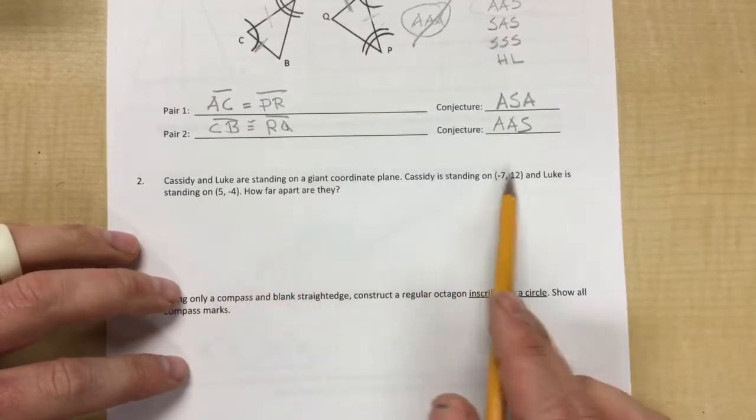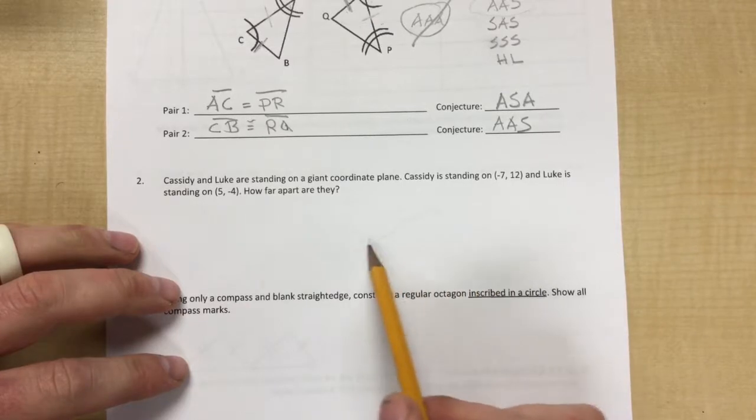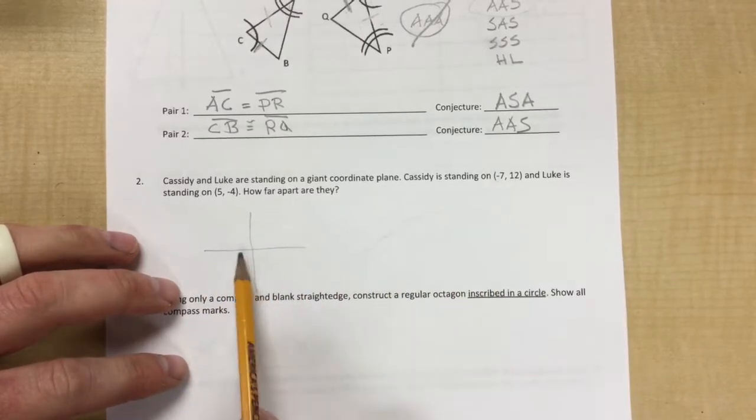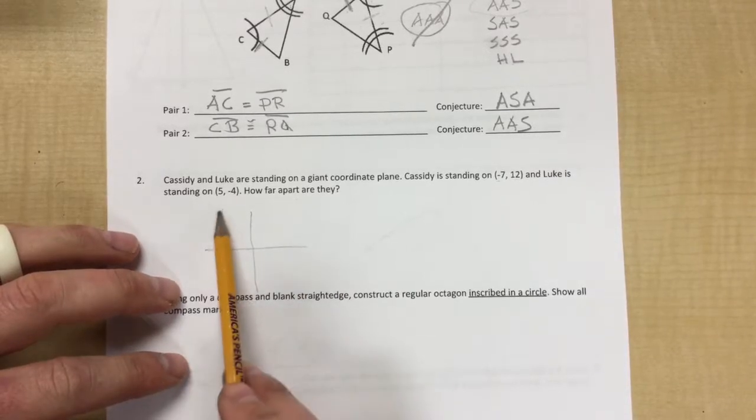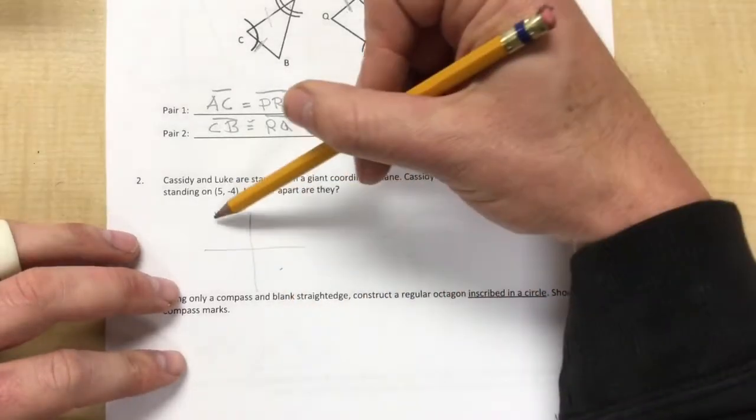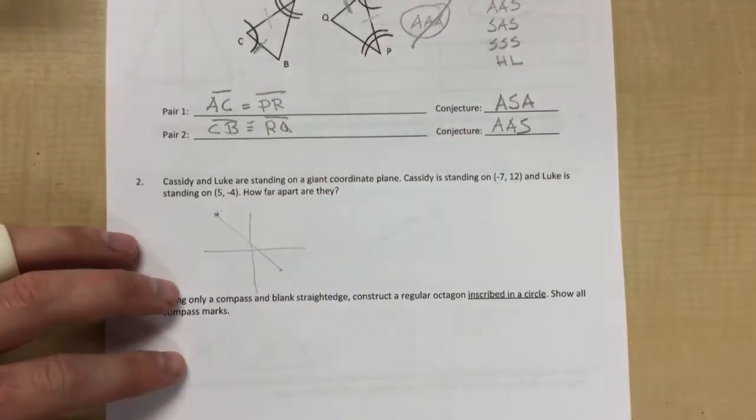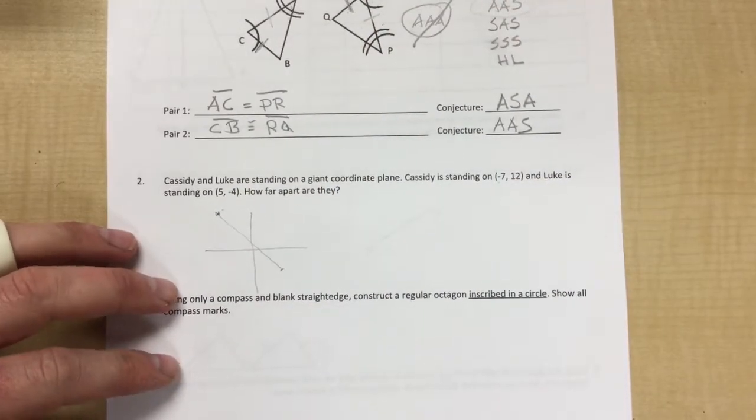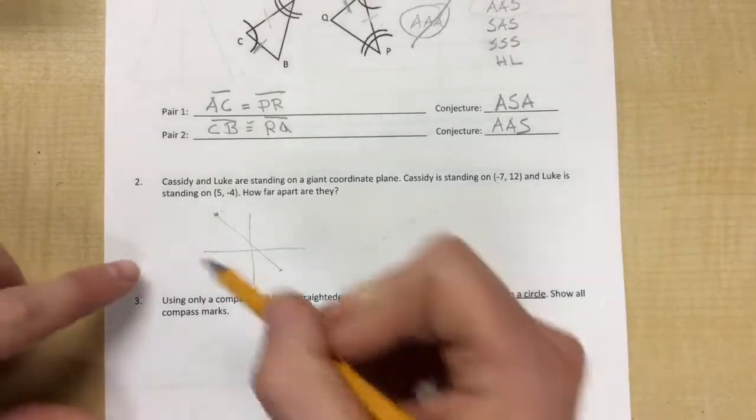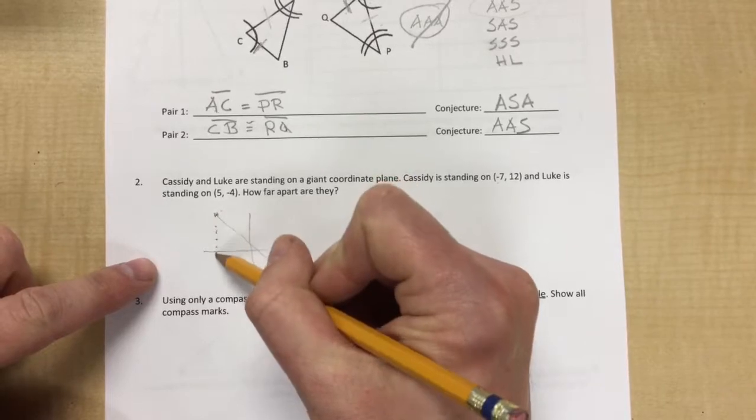So what we want to do is basically, if you were to graph these, so negative seven twelve—you don't have to graph them—but if you were to graph them, negative seven twelve would be like negative seven twelve, and five negative four would be like five negative four. It's going to be the distance of that line, so graph it if it makes you feel better. You could even use graph paper, but basically we need to make this into a right triangle.